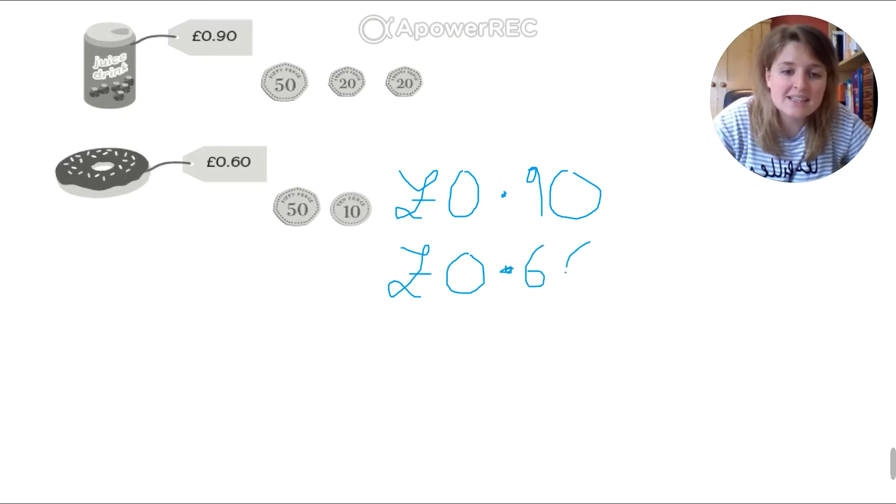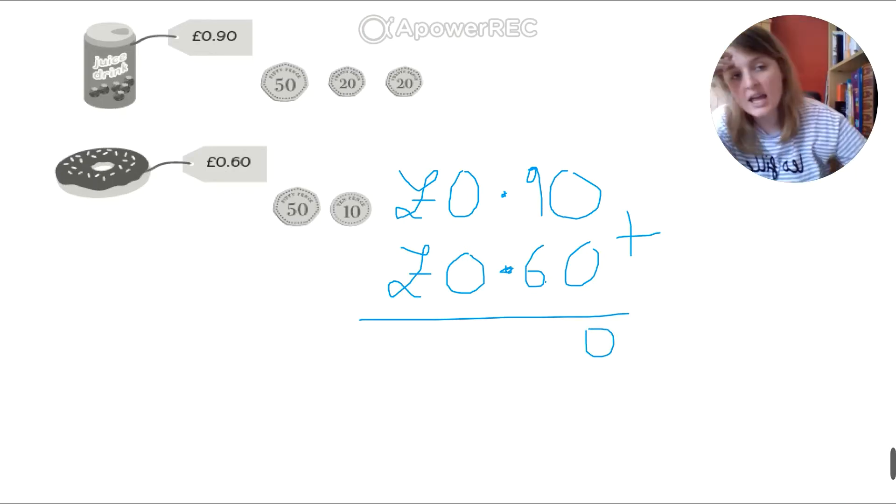0.60. And I'm going to add these together. And it is as simple as this. 0 and 0 is 0. 9 add 6. We're going to carry on. So 9 in our head.